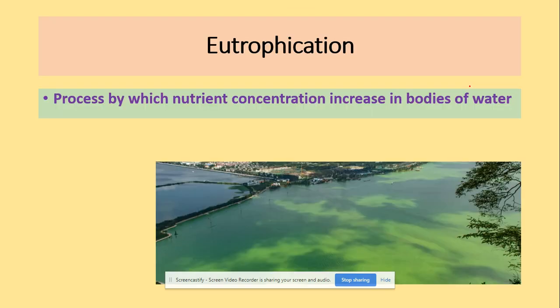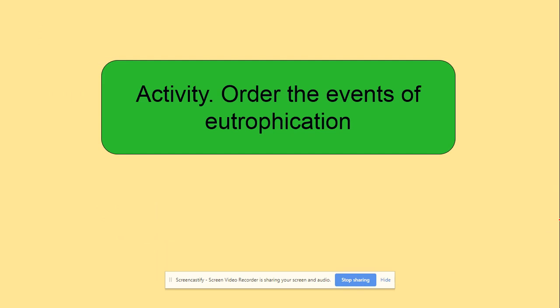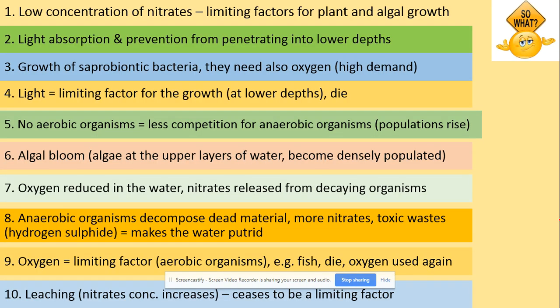Finally, eutrophication. Eutrophication is the process by which nutrient concentration increases in bodies of water. It is caused by leaching — when heavy rain dissolves fertilizers, they move beyond the reach of plant roots and get into lakes. Here we have the process of eutrophication presented in an incorrect order, and your job is to put it in the right order. You can pause the video now.